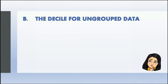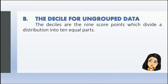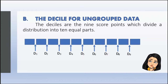Next, we have the decile for ungrouped data. The deciles are the 9 score points which divide a distribution into 10 equal parts. The score points are decile 1, decile 2, decile 3, decile 4, decile 5, decile 6, decile 7, decile 8, and decile 9.